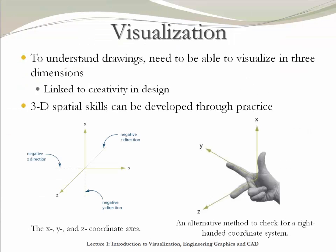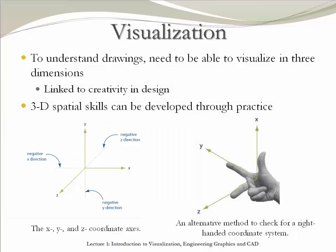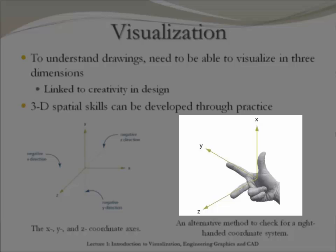One of the most fundamental concepts in engineering graphics is the ability to visualize objects in three dimensions. The three axes are usually arranged in a standard manner, and each axis always has a positive and a negative direction. An alternative method to confirm the right coordinate system is by using your right hand: open the hand with the thumb, the index, and the middle finger as shown. The thumb corresponds to the x-axis, the index to the y-axis, and the middle finger to the z-axis.